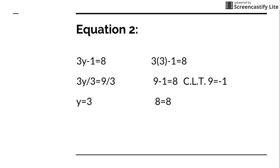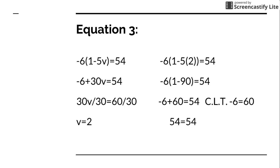Now on to number 3. Come on, this is easy. Negative 6 times 1 minus 5v is equal to 54. Here is the first step, distributive property. It's negative 6 plus 30v is equal to 54. Now add 6 to both sides, and now you should have 30v is equal to 60. You just divide everything by 30. Now you have v is equal to 2. Now substitute 2 where the v was.